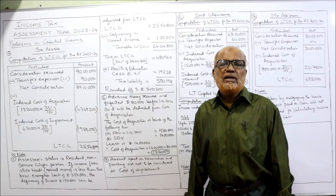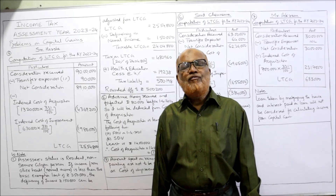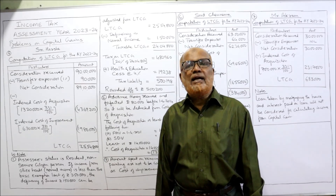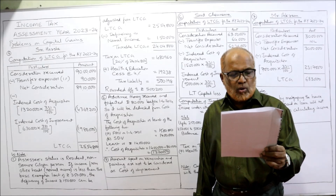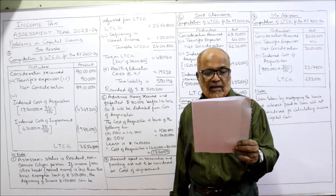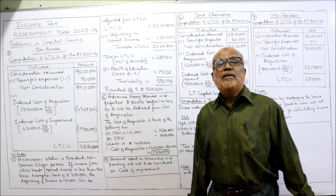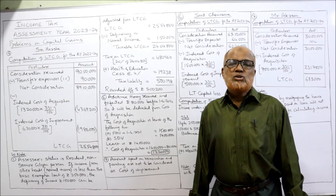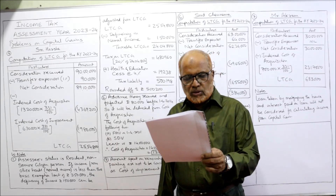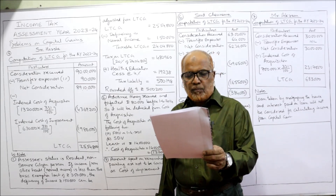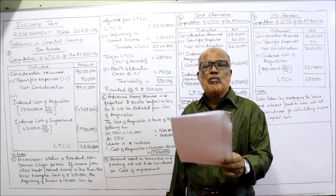FMV is Rs. 15,00,000 and stamp duty value is Rs. 14,00,000, so the least of these two is Rs. 14,00,000. We will take Rs. 14,00,000 as the cost of acquisition. From Rs. 14,00,000, we deduct the forfeited amount of Rs. 80,000. During previous year 2002-2003, one more floor was added to the building at a cost of Rs. 6,30,000 — Cost Inflation Index 105. That means there is improvement, so indexed cost of improvement also has to be deducted. During 2008-2009, Rs. 3,00,000 was spent on renovation and painting — CII 137.